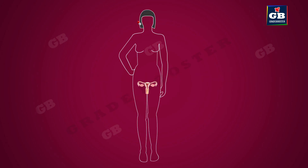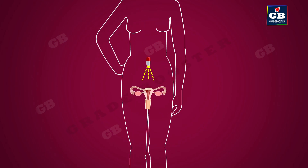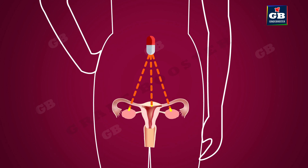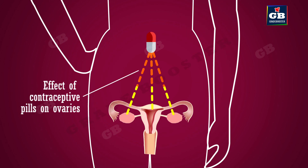Oral contraceptive pills change the hormonal balance of women and stop the release of eggs and fertilization. However, changing hormonal balance leads to many side effects.